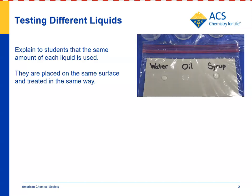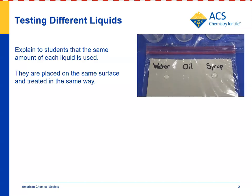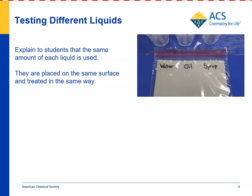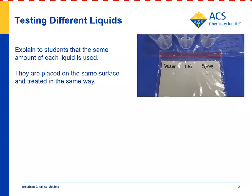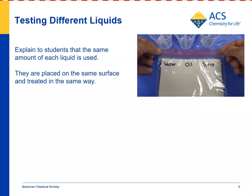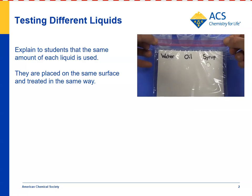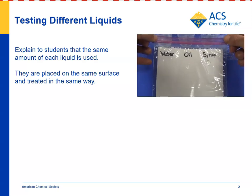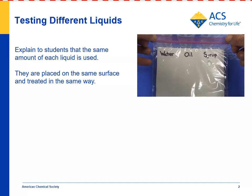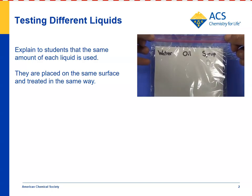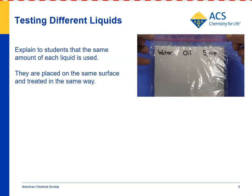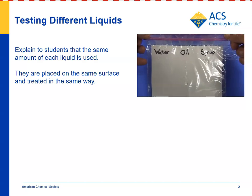Students then tilt the plastic bag and test how fast and in what way the liquids move down the bag. Water goes really fast and doesn't leave a trail behind, oil moves more slowly and leaves a trail of oil, and syrup barely moves at all. So even though the liquids look very similar, they have very different properties.